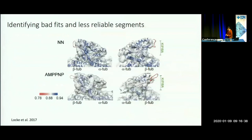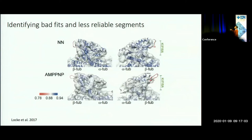You can use SMOCK to identify segments which are badly fitted. These can be either genuine errors or areas with less information. For example, some of the disordered loops are badly scored because there's no or less information available for evaluating fit in relation to the rest of the model.